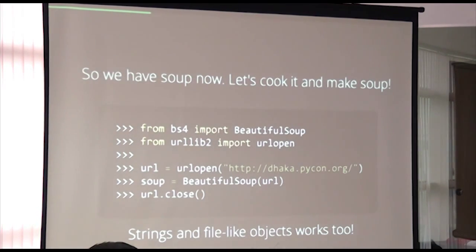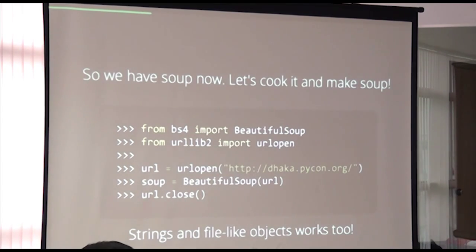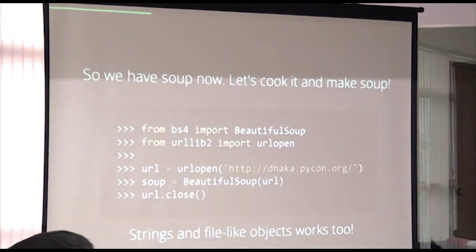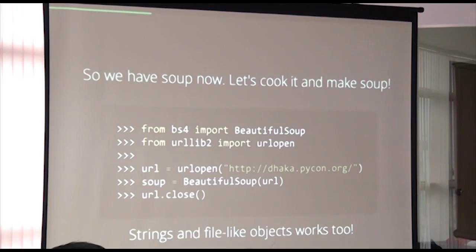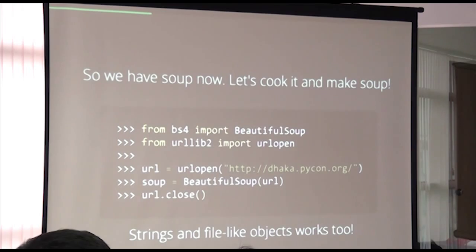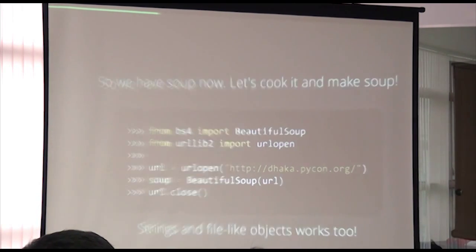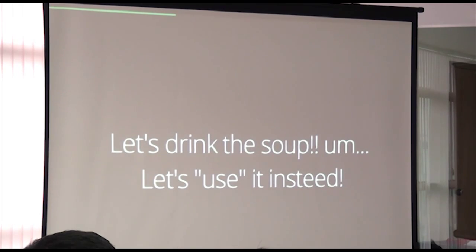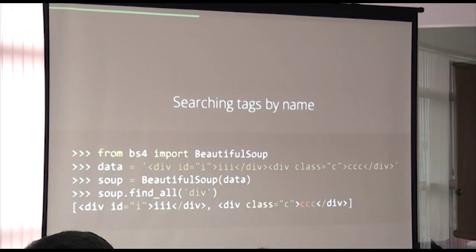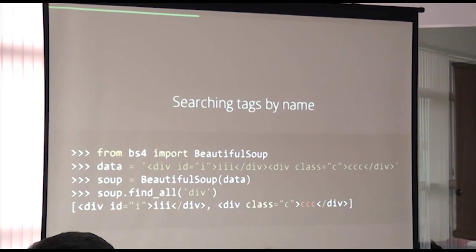If we use Beautiful Soup, we can use it as a classic constructor. We can pass a file-type object or a string. We pass the string to the HTML document and create a soup object. When we pass the soup, the most basic method is find_all.